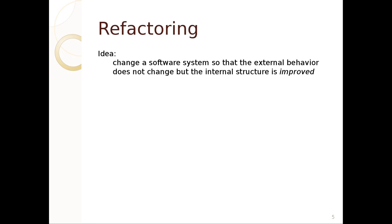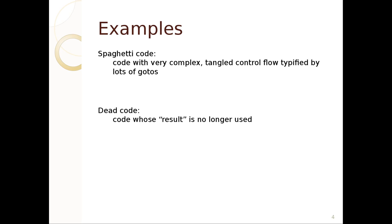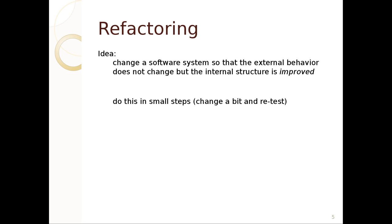So how do we get rid of these things? Well, the plan is we refactor. Refactoring allows us to change a software system so that the external behavior does not change but the internal structure is improved. In the case of spaghetti code, we might try to simplify the logic or put the logic into different classes — like if we had big conditionals about which weapon in a game it was, maybe we just want the weapon object to deal with that. The academic definition of refactoring is that the external behavior should not change.